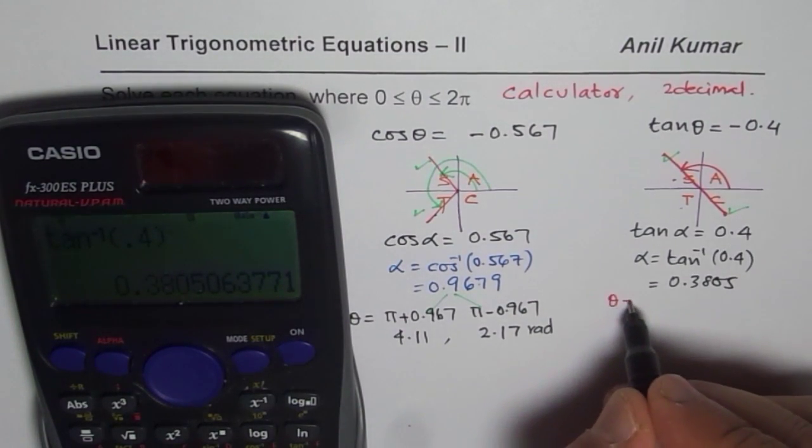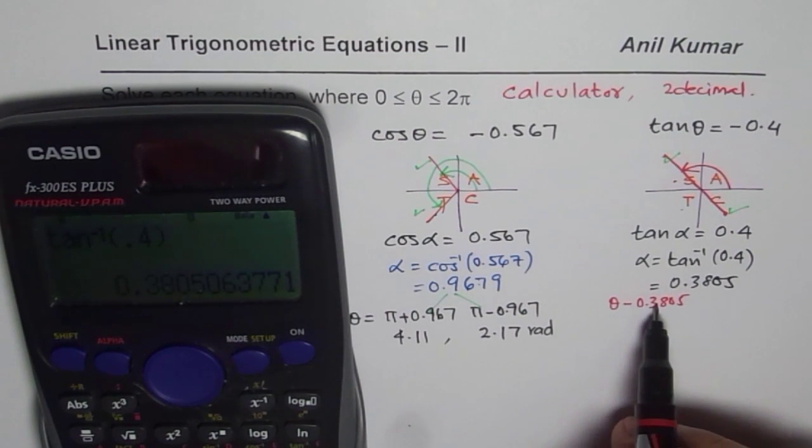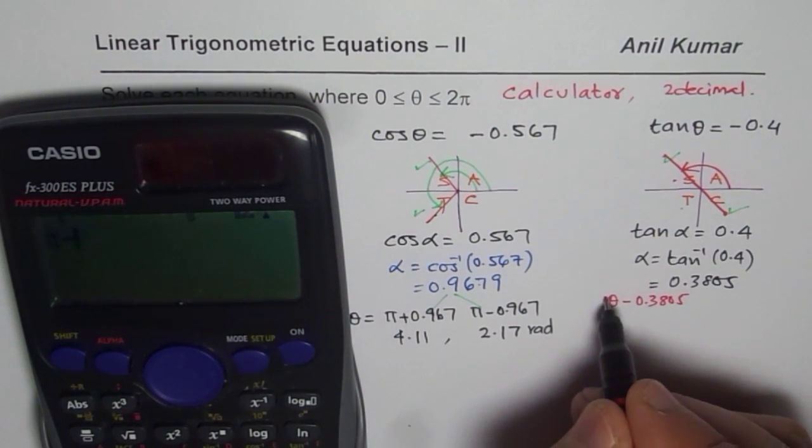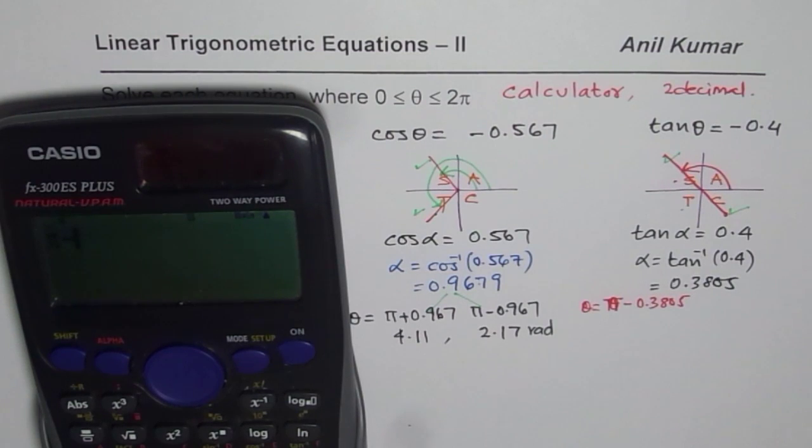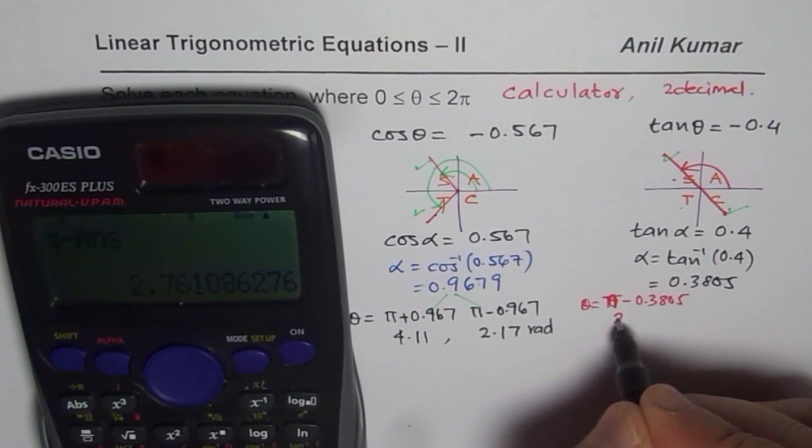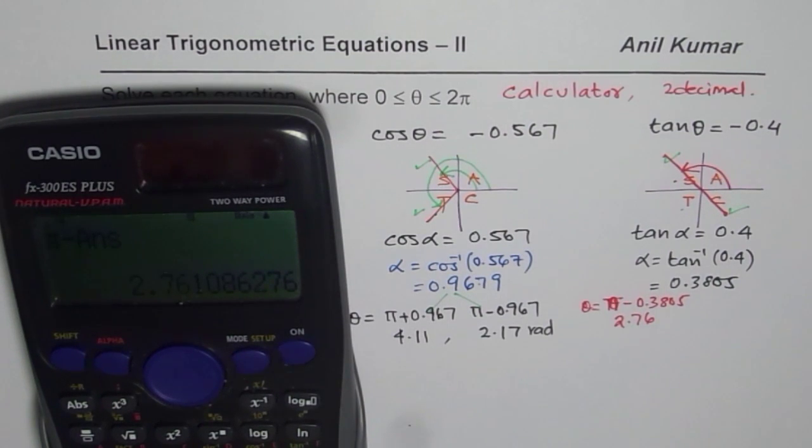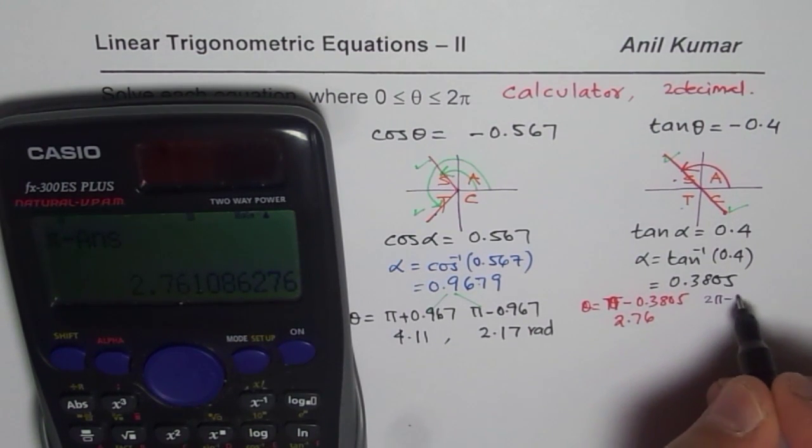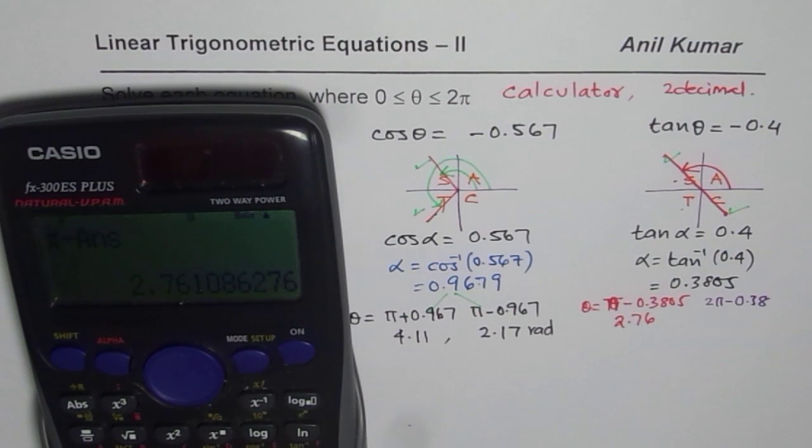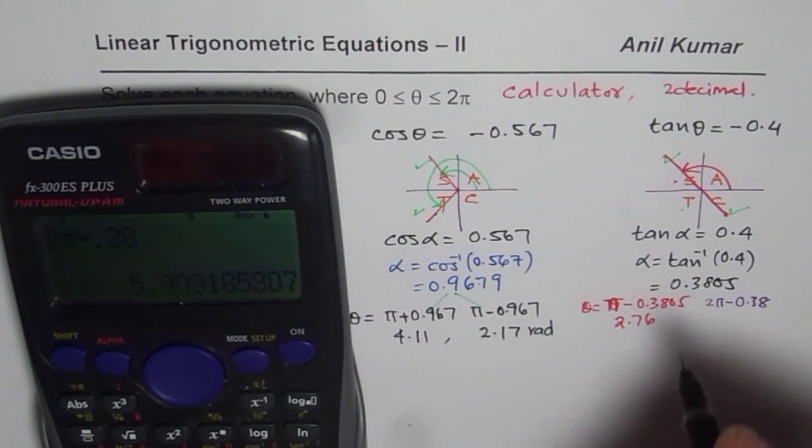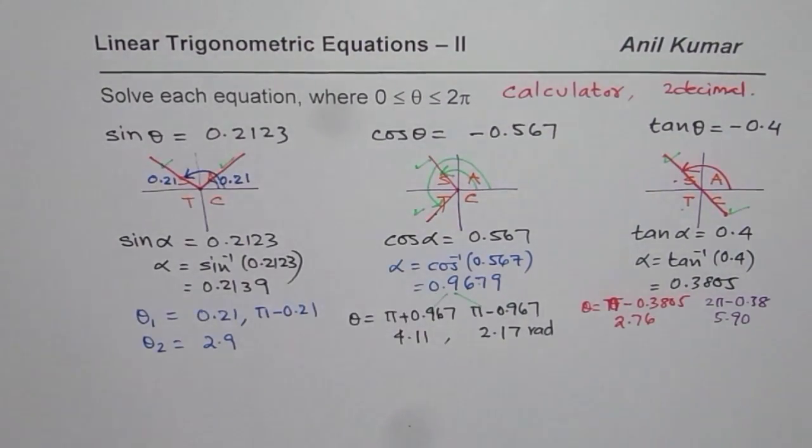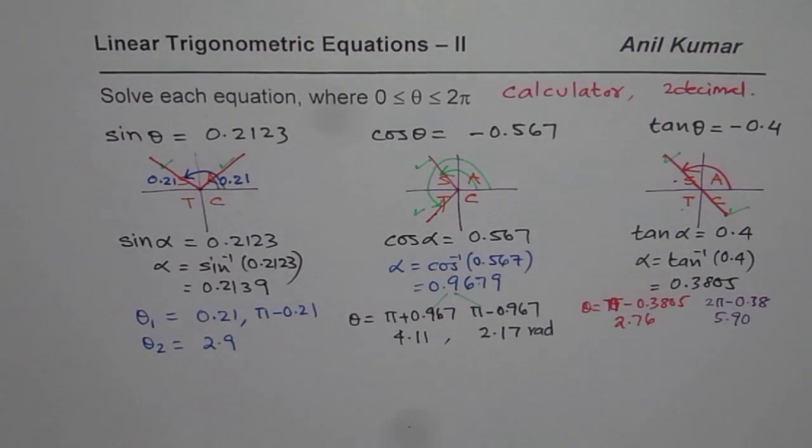One of the solution is π minus this acute angle. So one solution is π - 0.3805. So we have θ = π minus the answer, which equals to 2.76. We will round it to two decimal places. The other one will be 2π minus the acute angle 0.38. So we will do 2 times π take away 0.38. That is the acute angle. So we get 5.90 as our solution. That is how we are going to solve using calculator our answers.